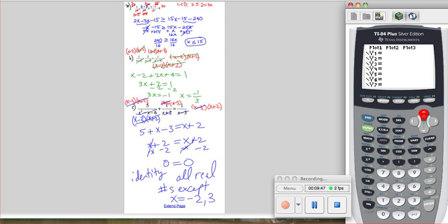In order to see this graphically, under y equals we put 5 divided by parentheses x squared minus x minus 6, close parentheses, and then plus 1 divided by parentheses x plus 2.